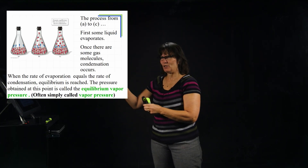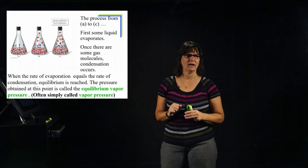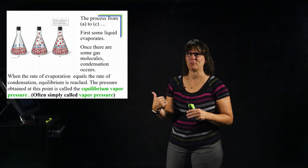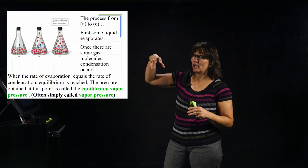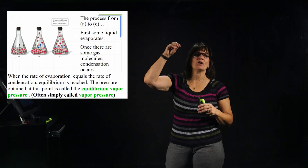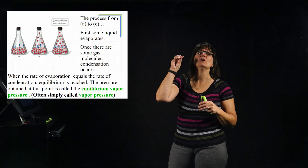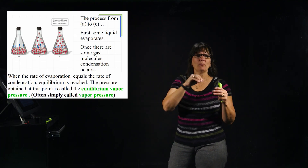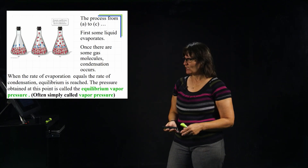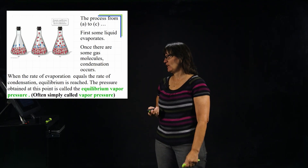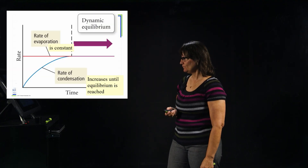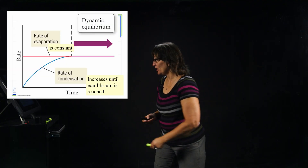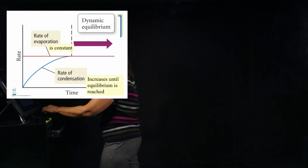In an intermediate state, there is some vapor pressure, but it's not yet the equilibrium vapor pressure. Eventually, you won't get any additional molecules entering the gas phase, and that is when we have achieved the full vapor pressure for that liquid.